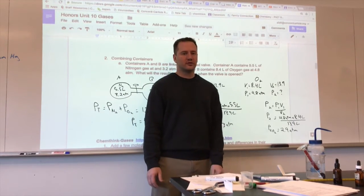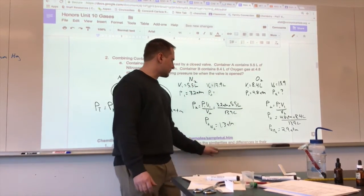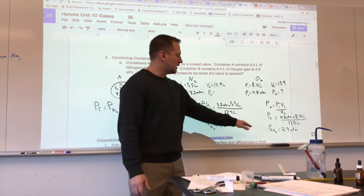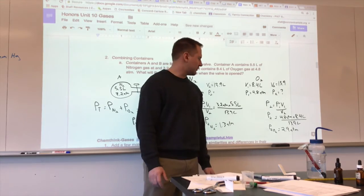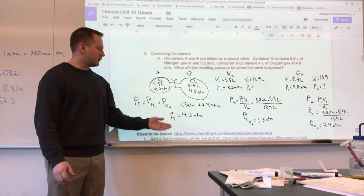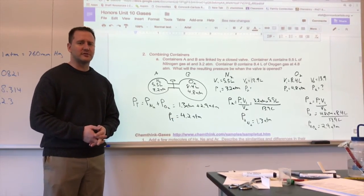For these gases, we get a final pressure of 1.3 atmospheres for the nitrogen and 2.9 atmospheres for the oxygen gas. Now, we add up those final pressures to get a total pressure of 4.2 atmospheres.